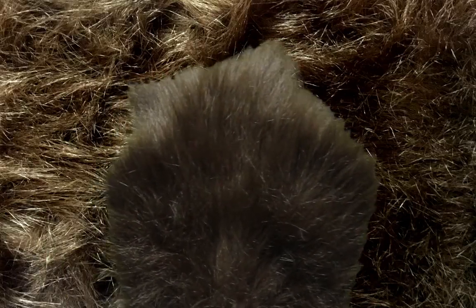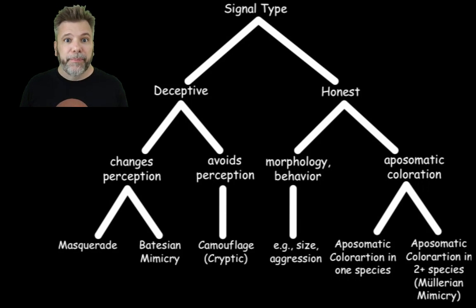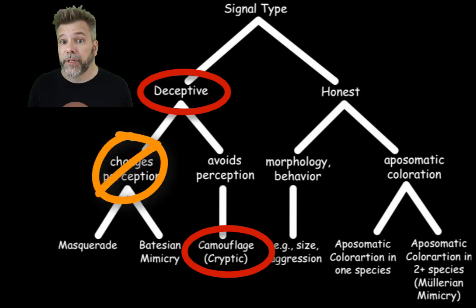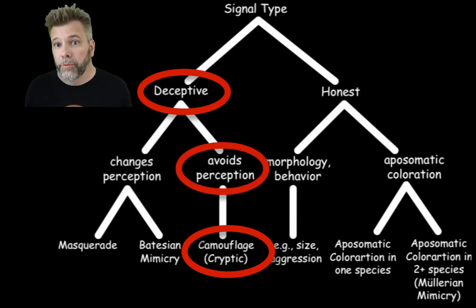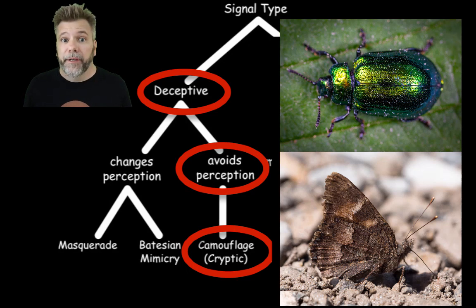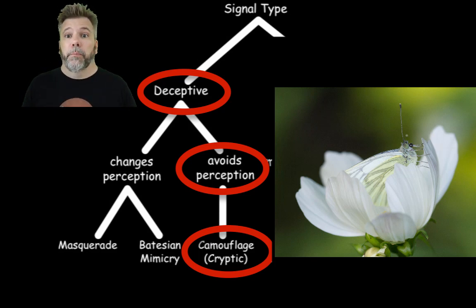What about being cryptic? That is a deceptive signal, but instead of changing your perception, I'm trying to make it so you don't perceive me at all — trying to hide completely. This is really common in insects. Probably the most common examples are insects being green or brown, generically blending into the background — not necessarily trying to look like anything specific, just blending away. Another example: a white butterfly on a white flower isn't trying to look like the flower, just blending in with the background.